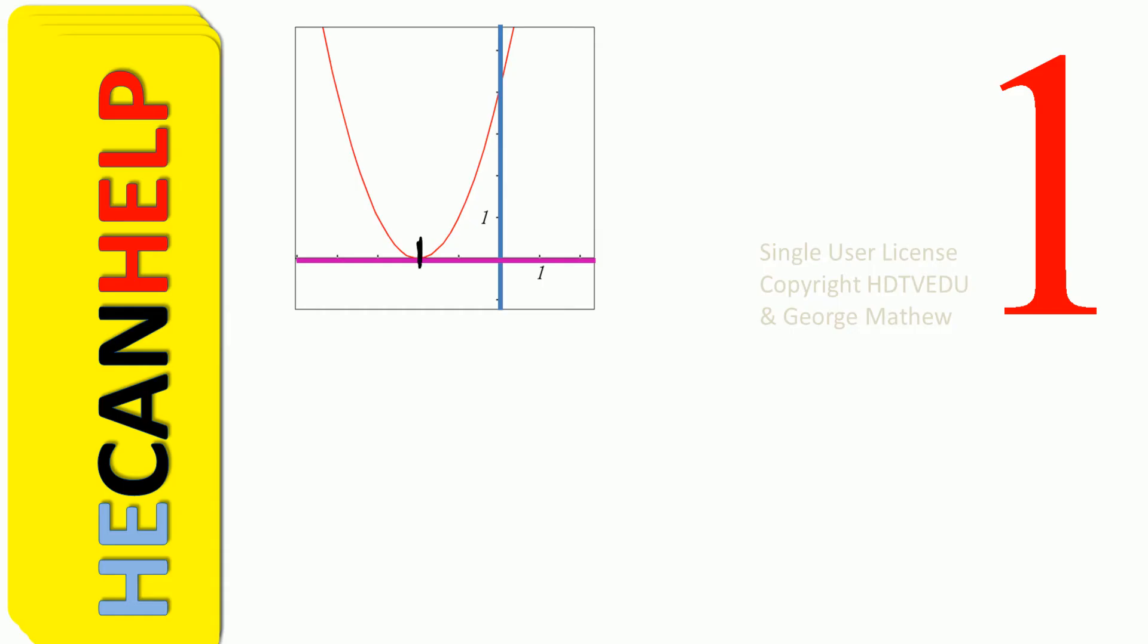We see that when x equals negative 2, this is negative 1 and this is negative 2. When x equals negative 2, what is y? y is equal to 0.